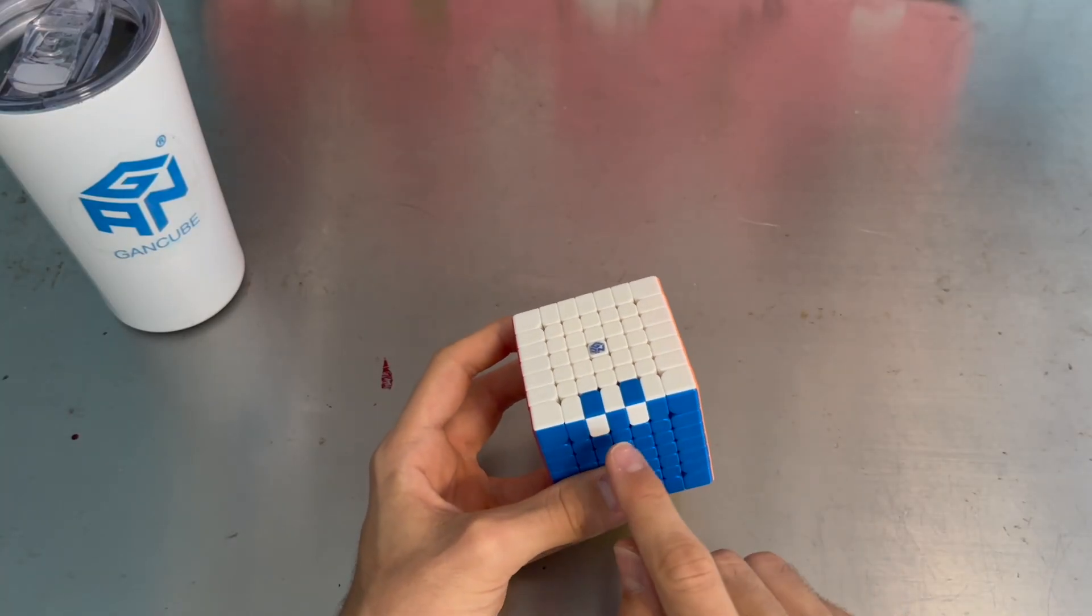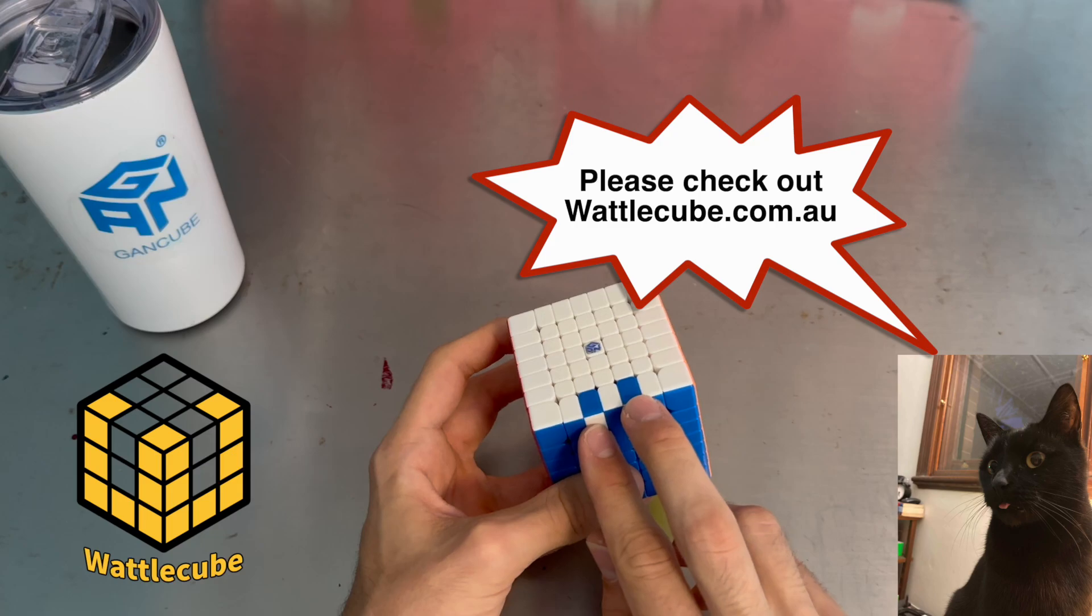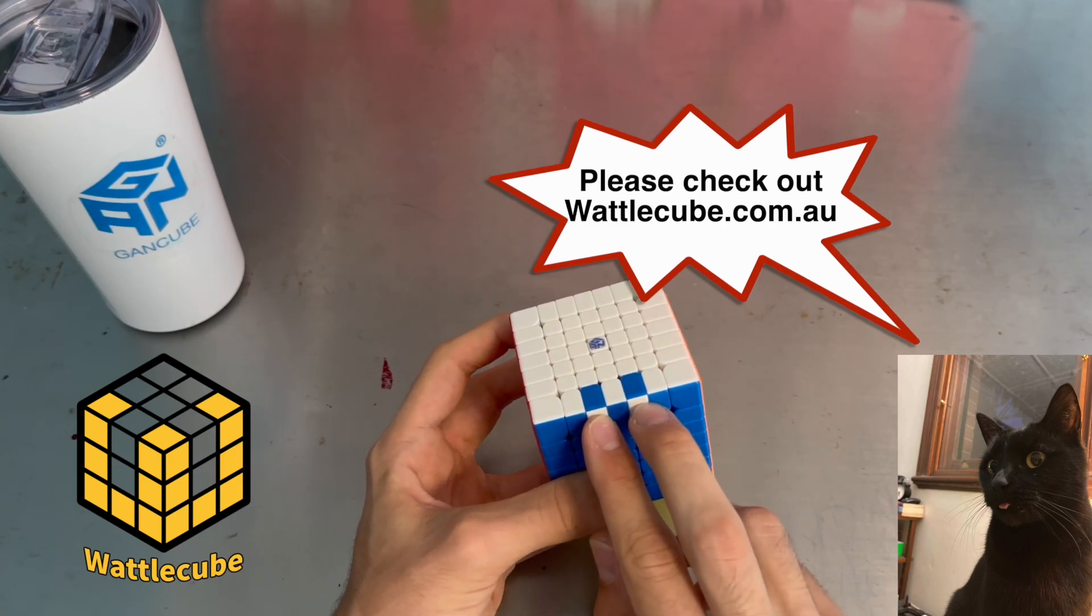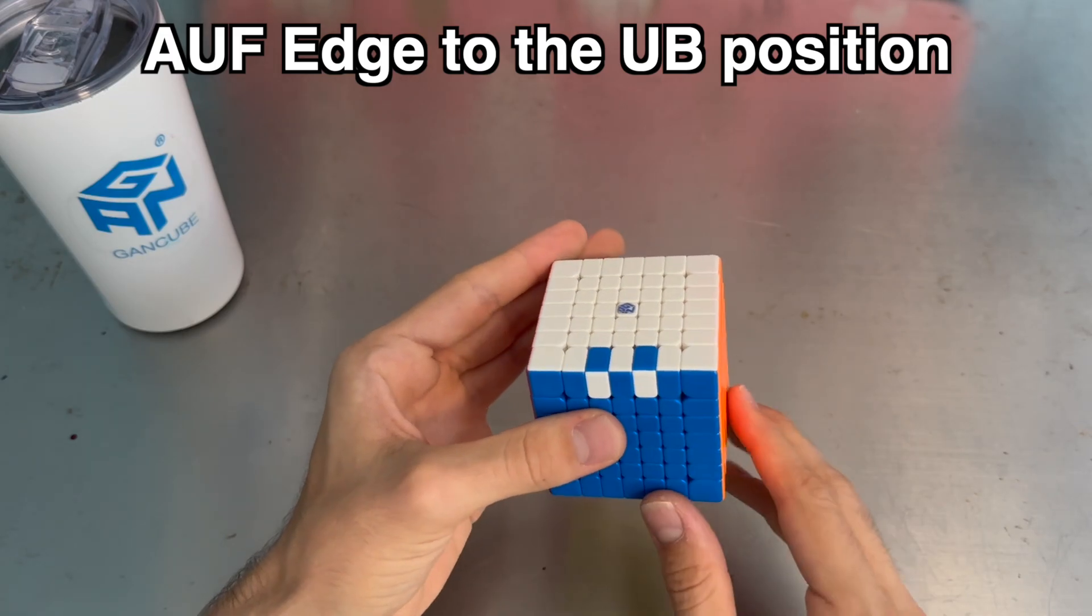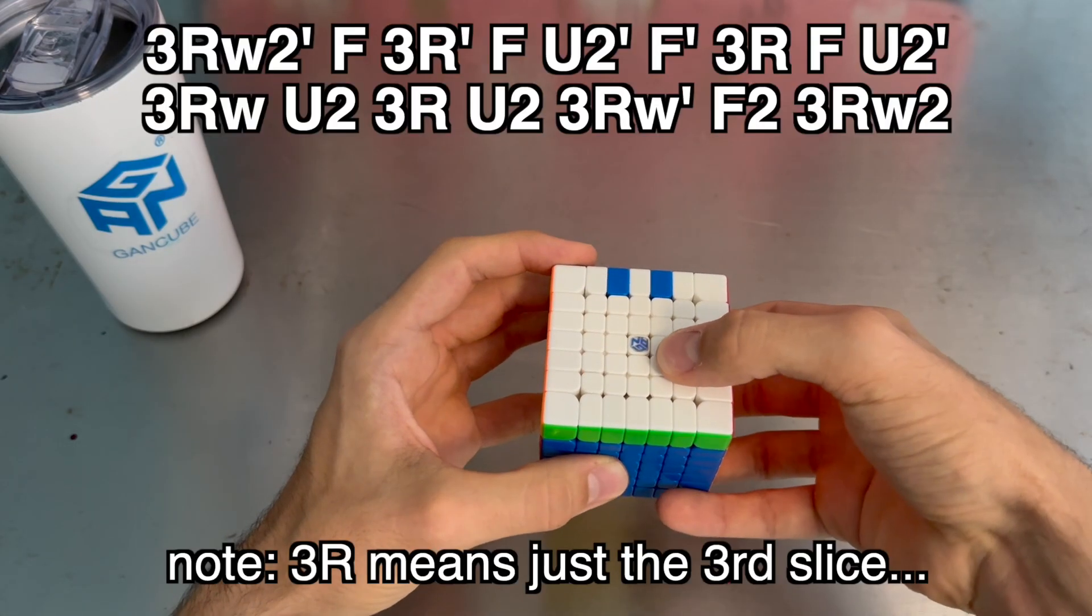Hello everyone, I recently found this inner edge parity alg for 6x6 and 7x7. I haven't seen any videos online about it, so I just thought I'd make one. The pre-AUF of the edge goes at the back, and it goes like this.